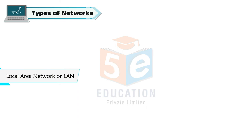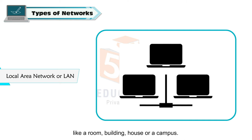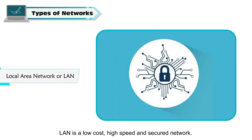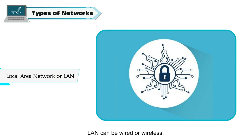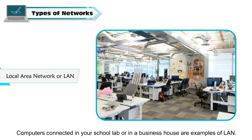Local Area Network or LAN is used when two or more computers are connected within a small area like a room, building, house, or campus. LAN is a low-cost, high-speed, and secured network. LAN can cover an area within 10 kilometers, and can be wired or wireless. A LAN connected in your school, lab, or business house are examples of LANs.